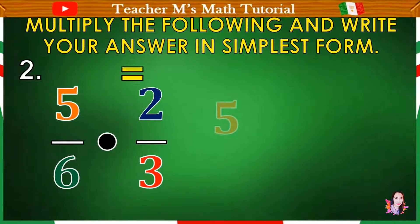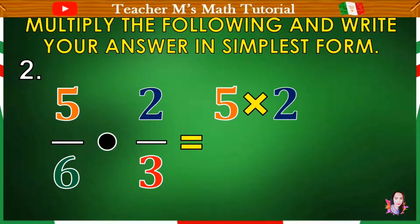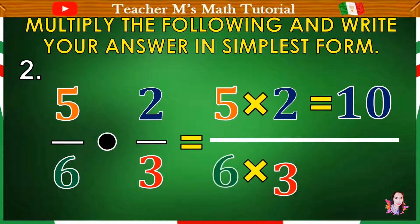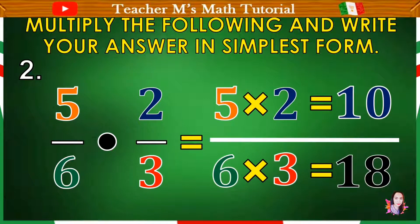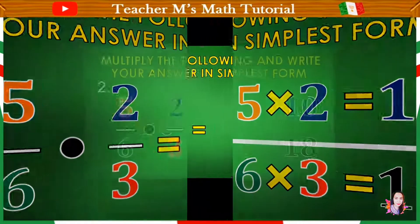Okay, let's proceed now to number 2. Okay, again, multiply the top numbers, the numerators, 5 times 2 equals 10. And the bottom numbers or the denominators, 6 times 3 equals 18. So the product is 10 over 18.